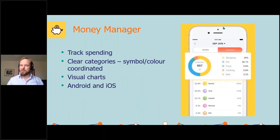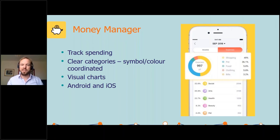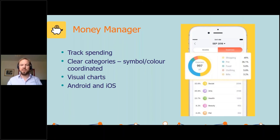A major part of mental health is money issues. I've included an app called Money Manager — it's a way of tracking your spending. What I liked is it's got clear categories with symbols and is colour coordinated. It's the kind of app you can use yourself and then teach to your learners, getting them to start understanding where their money goes in a week. This is helpful for learners with learning disabilities or memory issues, and starts to encourage independence.